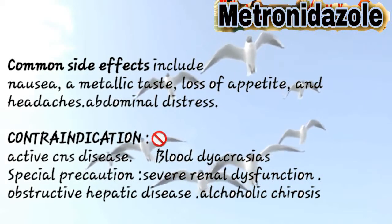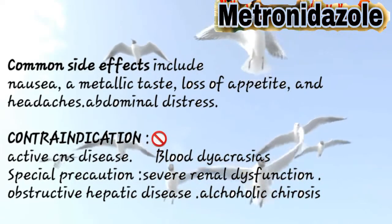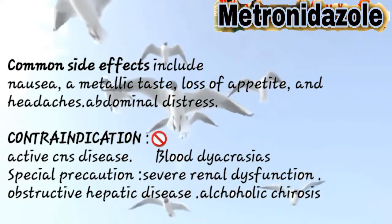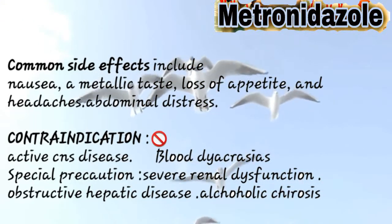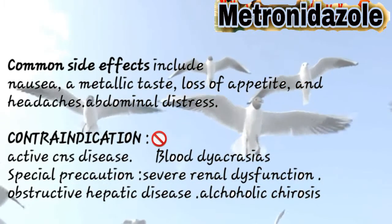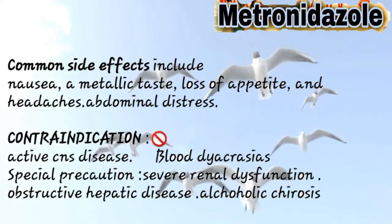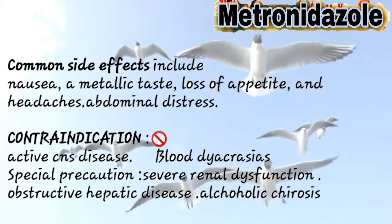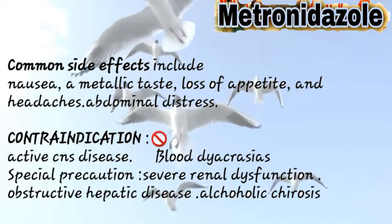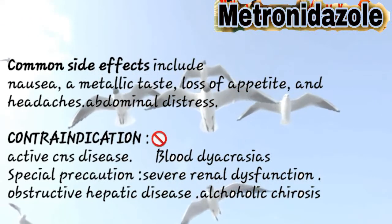Contraindications are conditions where metronidazole should not be taken. If a person has active CNS disease or a blood disorder, they should not take metronidazole. It should also not be taken with alcohol. Special precautions apply if the person has renal dysfunction, obstructive hepatic disease, any kind of liver or kidney disease, or alcoholic cirrhosis.